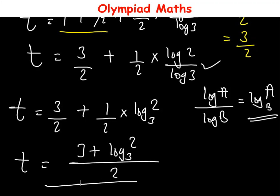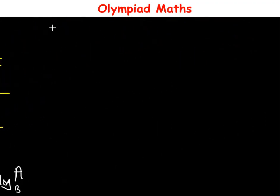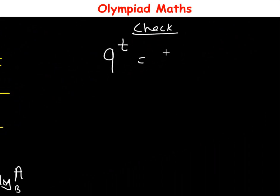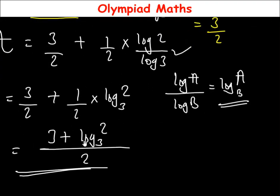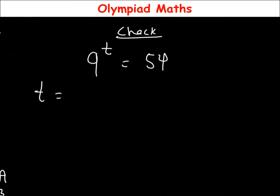With this, we've gotten the value of t. Now let us confirm whether the value of t we got satisfies the given equation. The equation was 9 raised to the power t is equal to 54. We got the value of t to be 3 plus log 2 base 3, all over 2. So the value of t is (3 + log₃2) / 2.